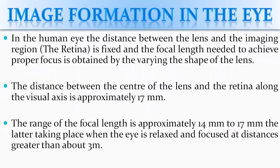Now we start image formation in the eye. Basically, image formation will be in our basic eye. In the human eye, the distance between the lens and the imaging region - the retina - is fixed, and the focal length needed to achieve proper focus is obtained by the varying shape of the lens.